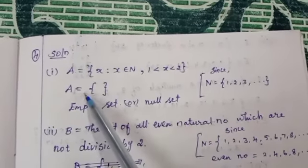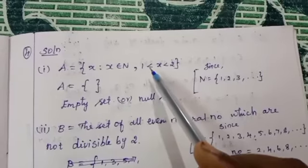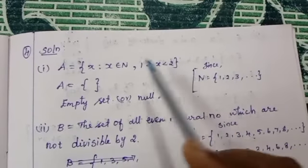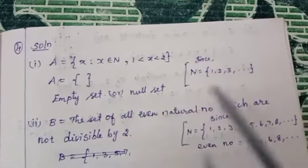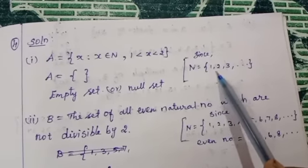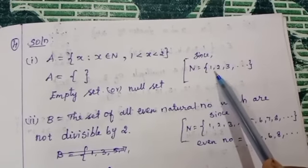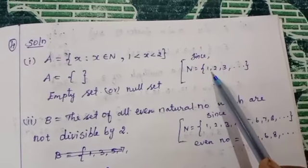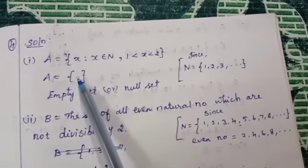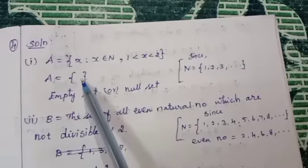A is equal to empty set. For we have to select the numbers between 1 and 2 from the natural numbers. Between 1 and 2, what numbers are there? No numbers — we have only decimal numbers. We need natural numbers, so there are no elements. So that is denoted by empty set.